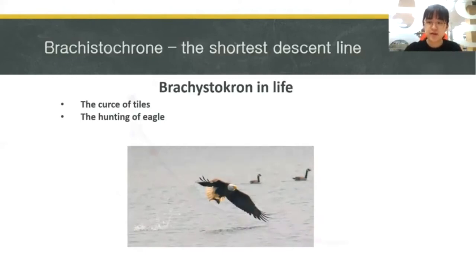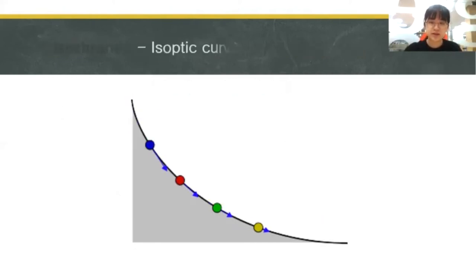Other than brachistochrone, another feature of cycloids is isochronism. In this case, when you let go of the ball at a certain point, the time it takes for the ball to arrive at the bottom is always the same.